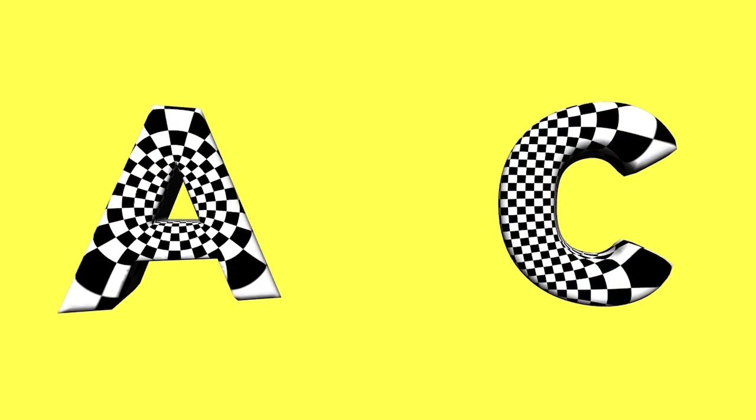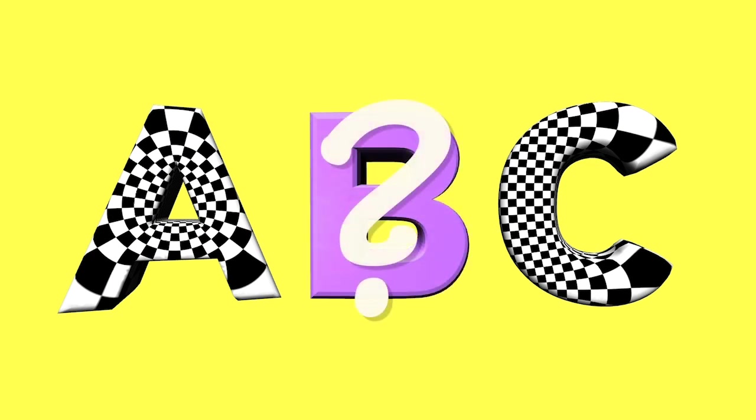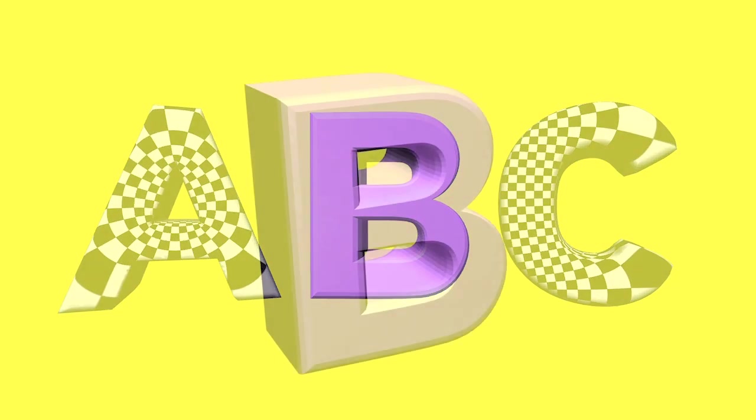We saw that it is possible to map a square grid conformally onto the inflated letters C and A. Can we do the same for the inflated letter B? The answer is yes, but it's more complicated.